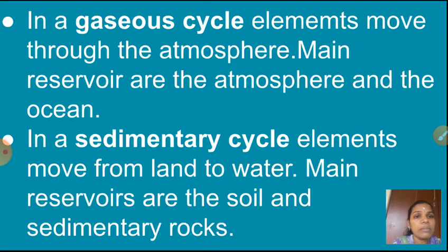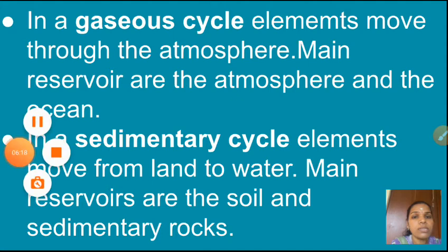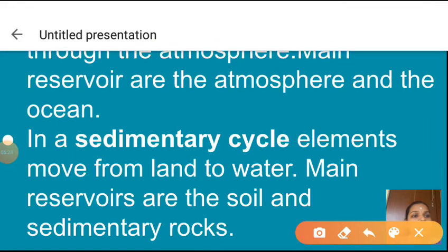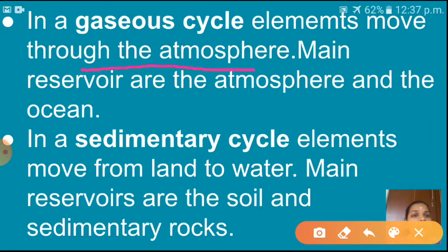In a gaseous cycle, elements move through the atmosphere. The main reservoirs of the gaseous cycle are the atmosphere and the ocean.